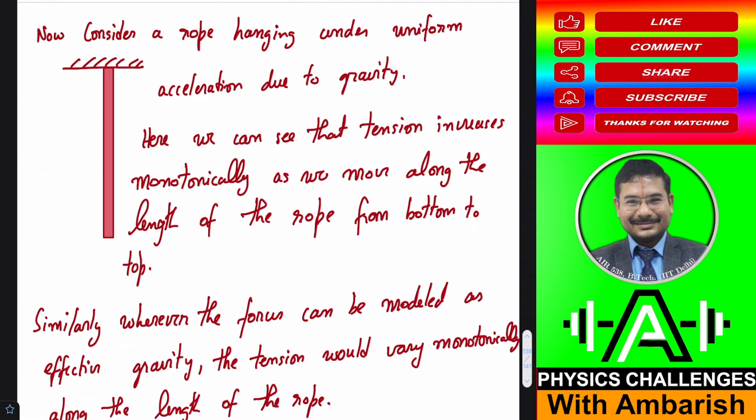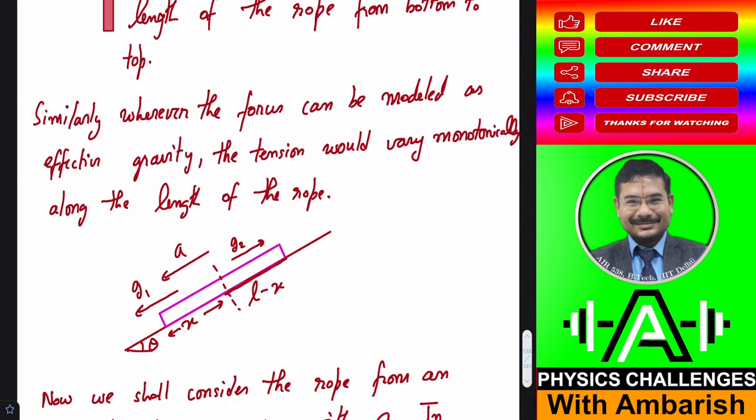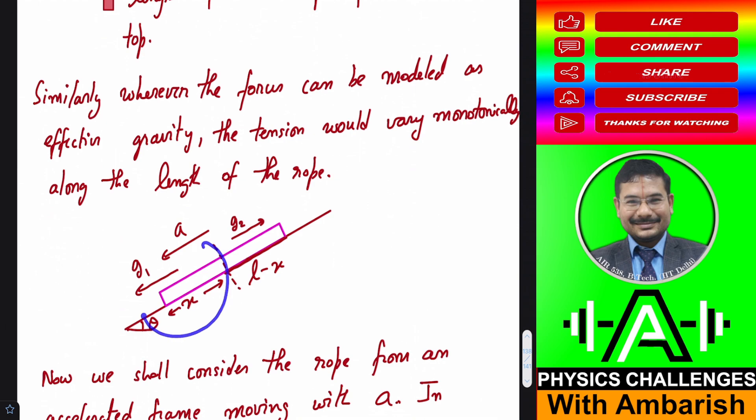Now this information can help us do this problem rather quickly. We know that this portion will have some effective acceleration due to gravity because there is no friction acting here, and the upper portion will have some other acceleration due to gravity. But one thing is for sure: tension will be monotonic. In the lower portion tension will be increasing monotonically, and similarly in the upper portion also the tension will be monotonic.